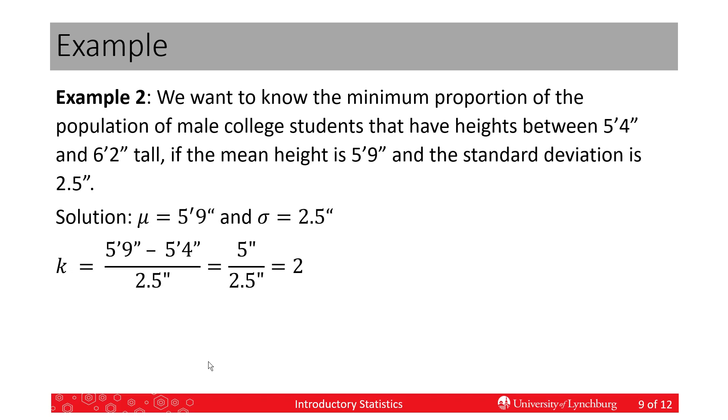So, the first step is to write down the symbols that you have, and then we need to figure out what k is. Now, we have to be the same number of standard deviations below the mean as we do above the mean, or this doesn't work. We can't use Chebyshev. So, if you notice, 5'9" has to be exactly in the middle of 5'4" to 6'2". So, we're talking about it has to be the same number of standard deviations above or below the mean. So, you choose the mean and one of these values and subtract.